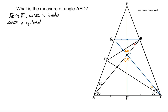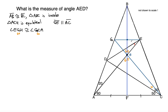Now, since GE and AC are parallel — because we made them that way — angle EGH is congruent to angle GCA. Why are these two congruent? Because since GE and AC are parallel and we can treat GC as a transversal, it makes EGH and GCA alternate interior angles. So since GCA is 60 degrees, angle EGH is also 60 degrees.